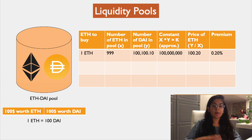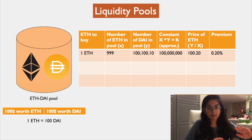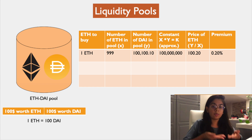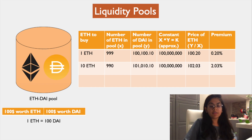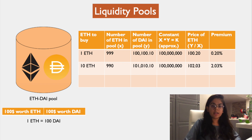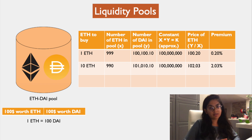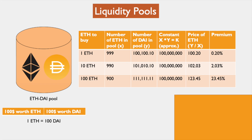You can see that you would have to pay a premium. Basically, if you buy ETH and sell DAI back to the liquidity pool, the price of ETH goes up — and that's how markets are created using this formula. If the number of ETH the buyer wants to buy increases to say 10, in order to maintain the constant K, the price of ETH has to go up.